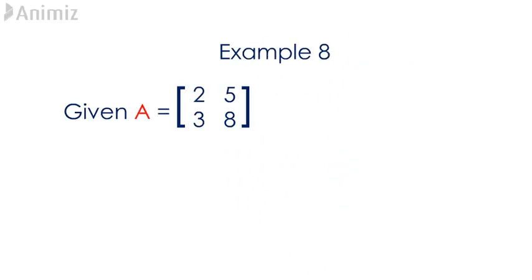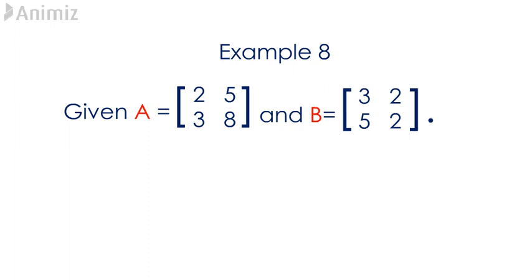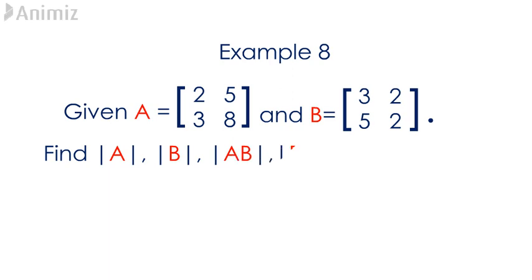Example 8. Given A is a matrix containing the elements 2, 5, 3, 8 and B is a matrix with the elements 3, 2, 5, 2. Find the determinant of A, the determinant of B, the determinant of AB, the determinant of BA, and the determinant of A multiplied by the determinant of B.